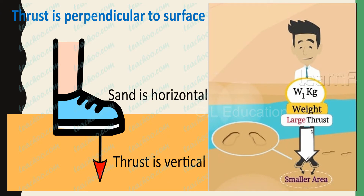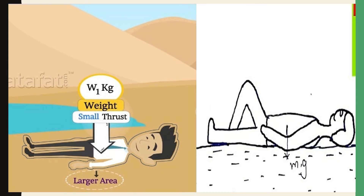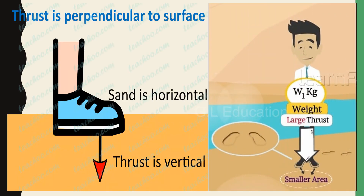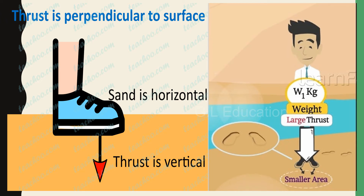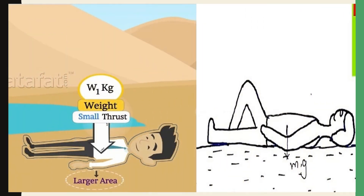Now let us see another example. If we stand on loose sand, we feel that our legs are going into the sand. Now if we lie on the sand, we feel that our body does not go that deep into the sand. In both cases, the force exerted is the weight of our body. When you stand, the weight of your body is exerted on an area equal to the area of your feet. When you lie down, the weight of your body is exerted on the whole contact area of your body.